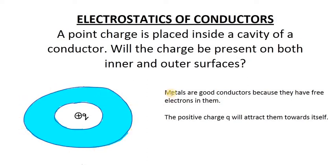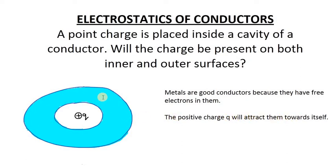Metals are good conductors of electricity because they have free electrons inside them. Free electrons are present everywhere, roaming here and there. When you put a positive charge Q inside the cavity, this positive charge Q will attract the free electrons present there. They will be attracted inwards towards the positive charge.